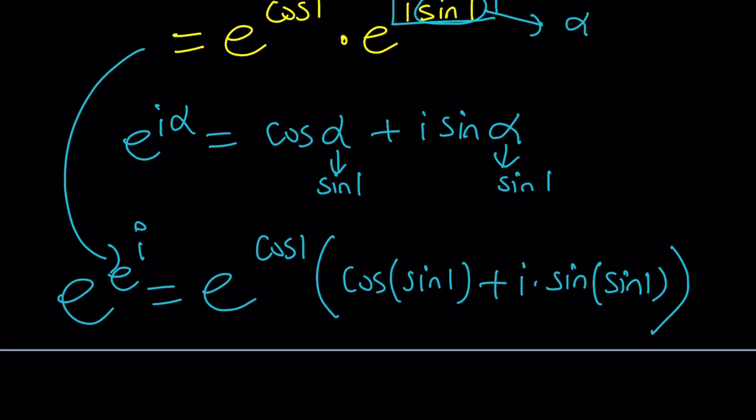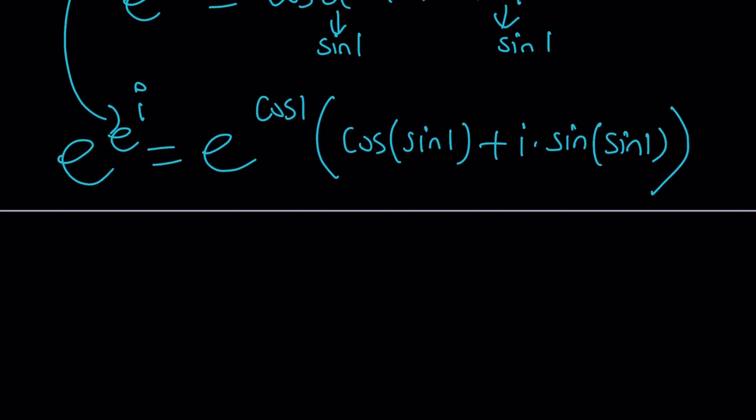That's how we can write it. And we can continue to do this with e to the e to the i, e to the e to the i. And what if you have infinitely many of these? Something to think about, right? There's going to be too many expressions. Anyways, so this is our expression.